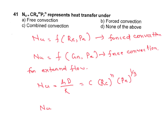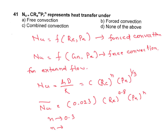For internal flow — fully developed turbulent flow inside a tube — the average Nusselt number is 0.023 into Re to the power 0.8, into Pr to the power m. This is important for the exam and is asked many times. The value of n is 0.3 when the fluid is cooling and 0.4 when the fluid is heating.